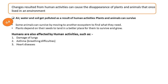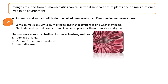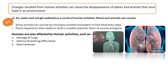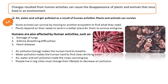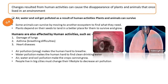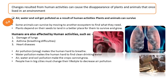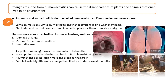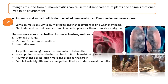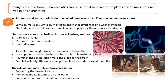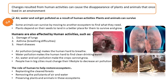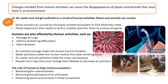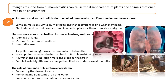Humans are also affected by human activities such as damage of lungs, asthma, breathing difficulties and heart diseases. Air pollution and smog make it hard to breathe. Water pollution makes it hard to find clean drinking water. Air, water and soil pollution prevents crops from growing. People in big cities must change their lifestyle to decrease air pollution. Humans can help restore ecosystems by replanting cleared forests, removing pollutants from air and water, and preserving plants and animals in ecosystems.